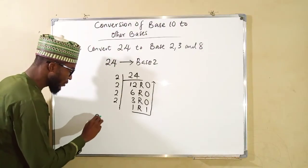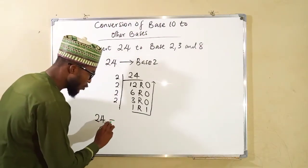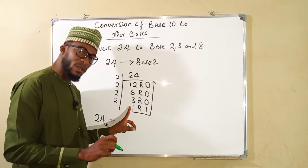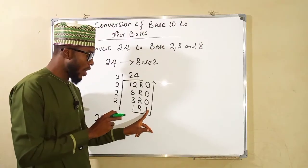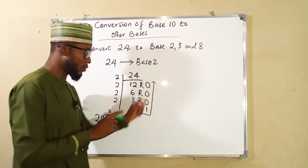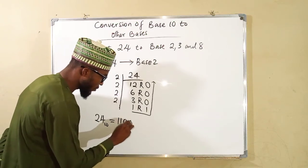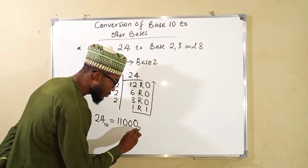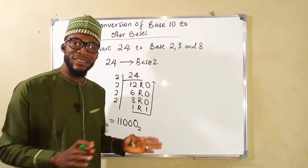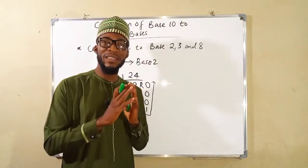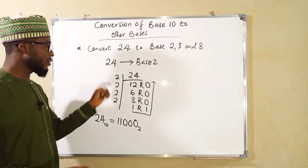We conclude by saying 24, which is a number in base 10, is equal to — starting from the last number upward — 1 1 0 0 0 0, but this number is in base 2. So 24 in base 10 and 110000 in base 2 are exactly the same, just in different bases. Now let us see the conversion of this number to base 3.